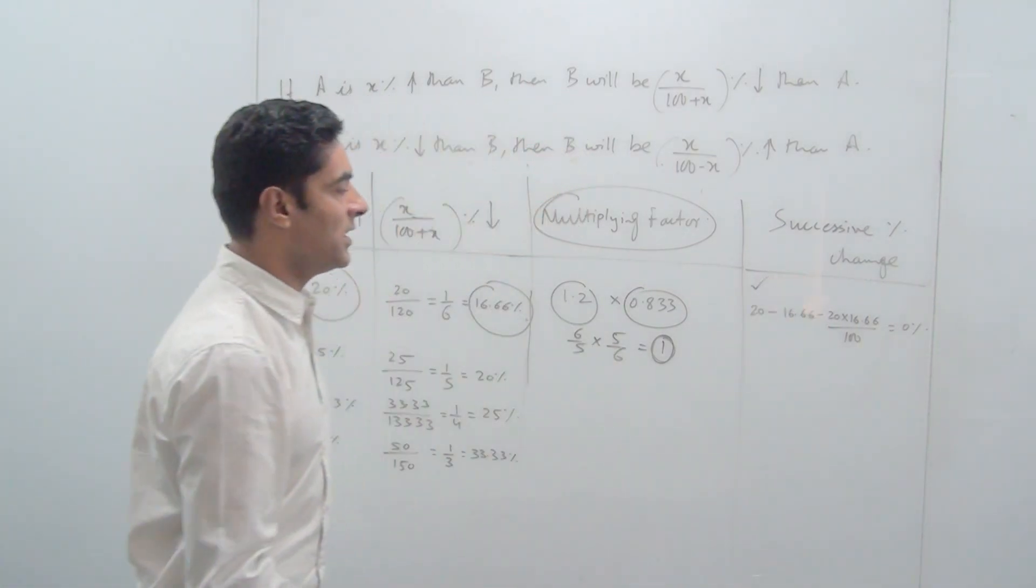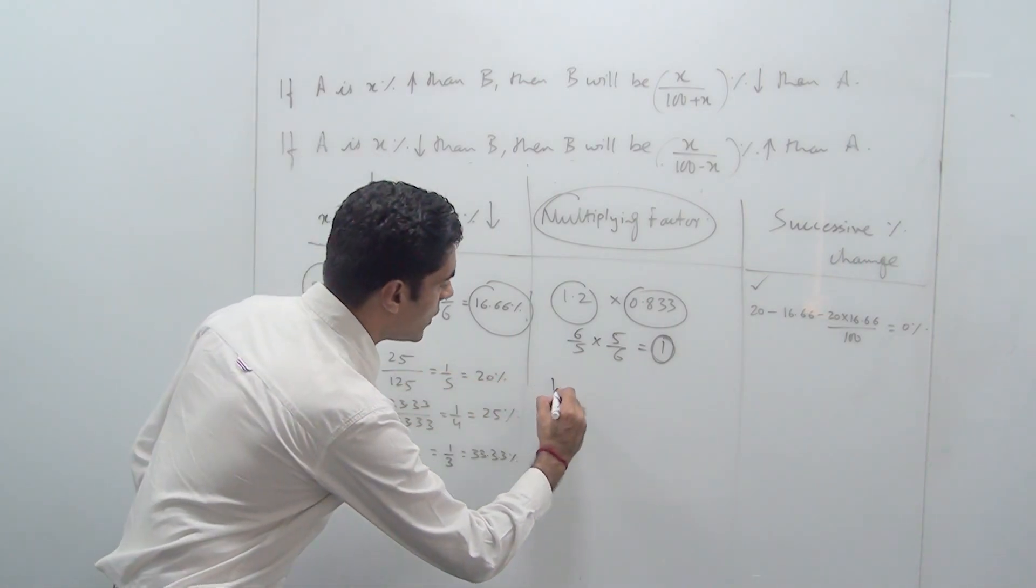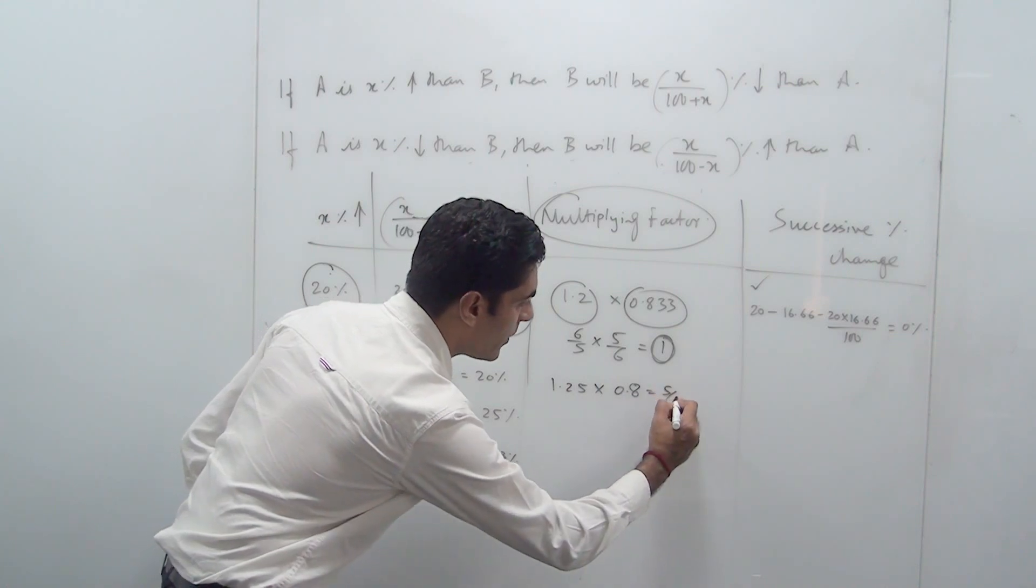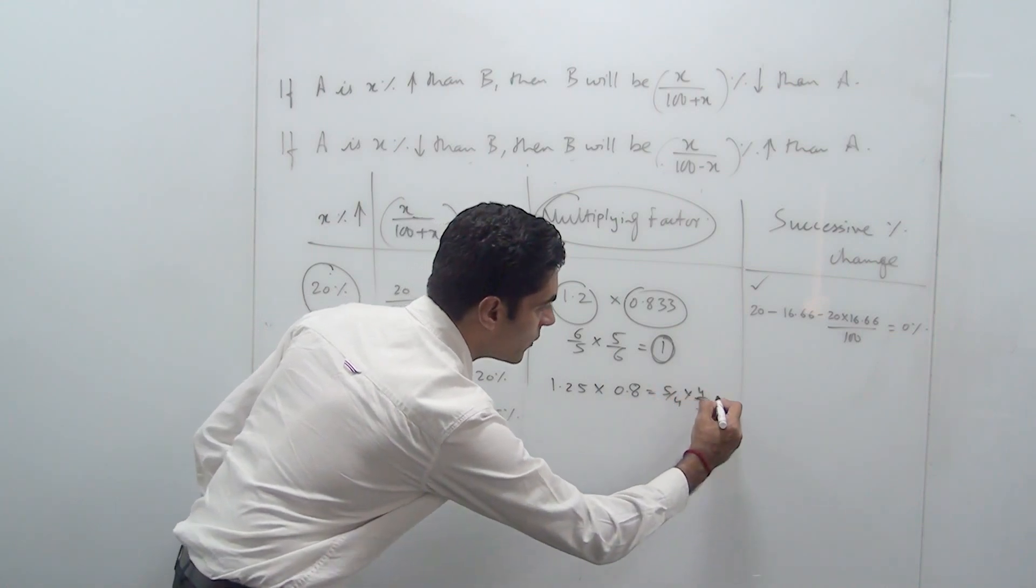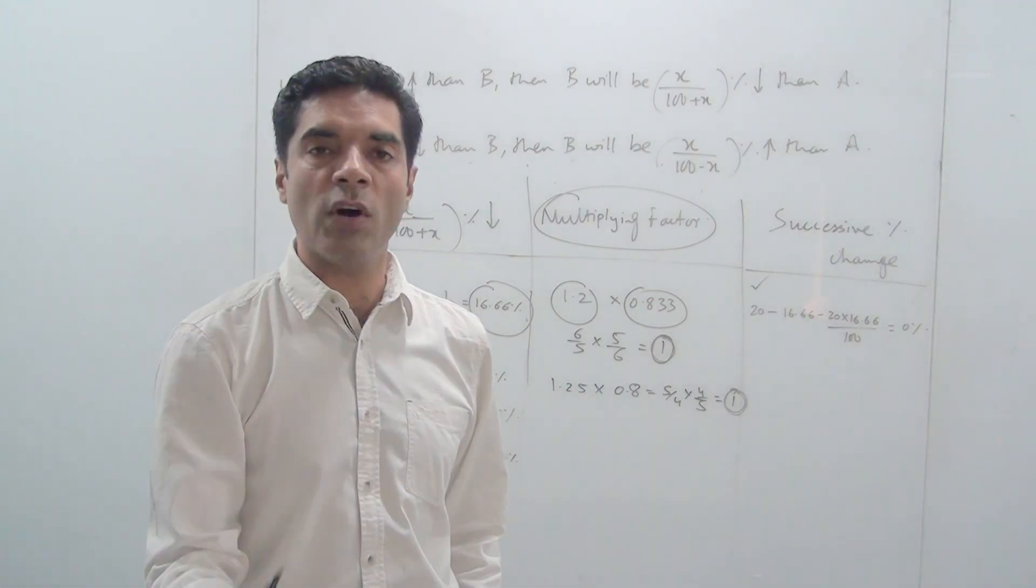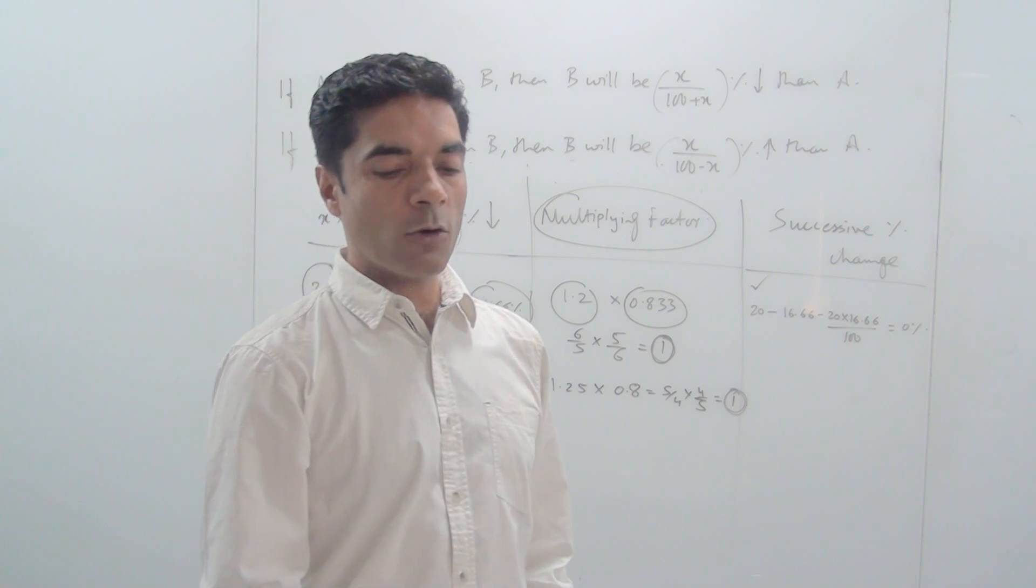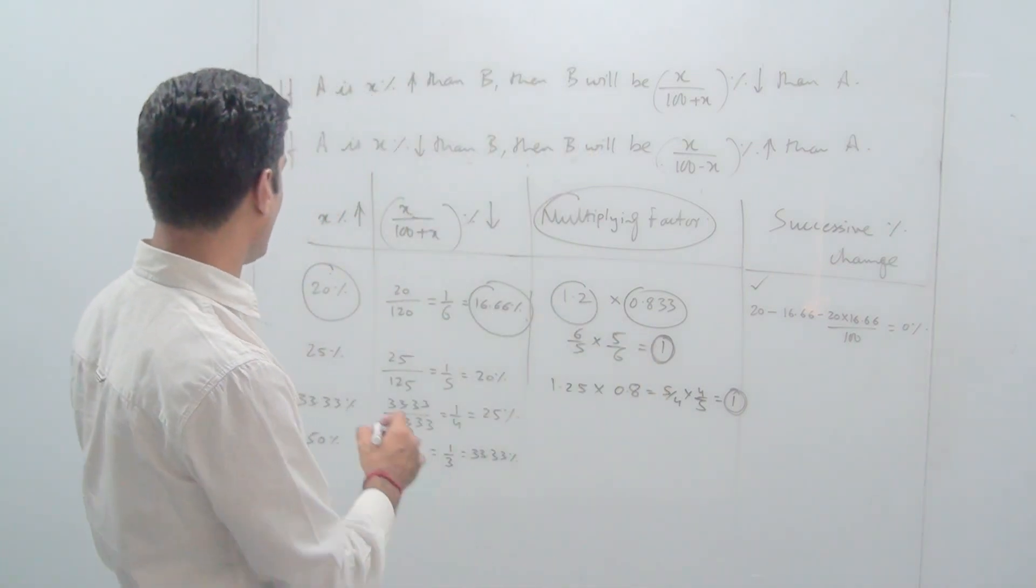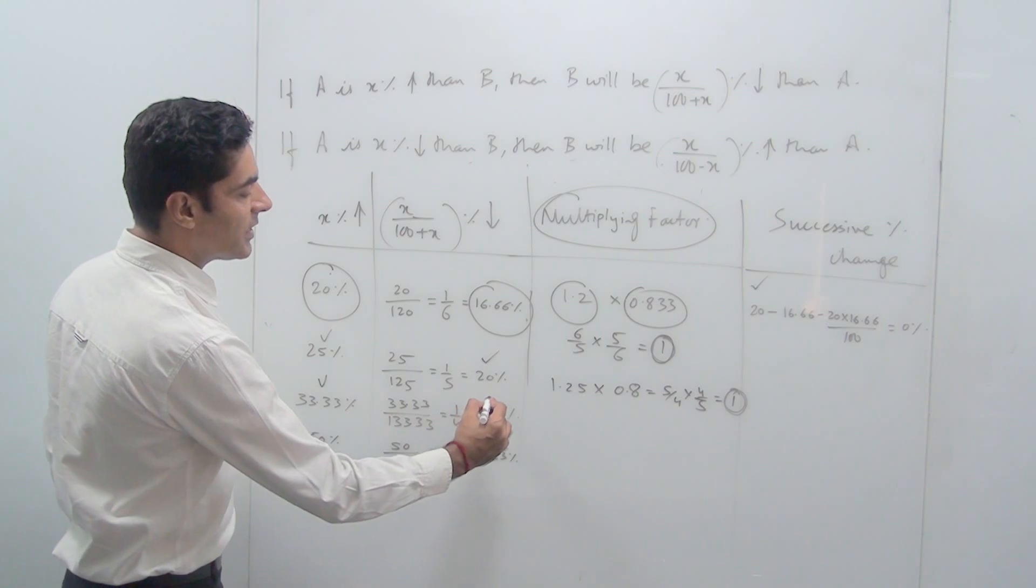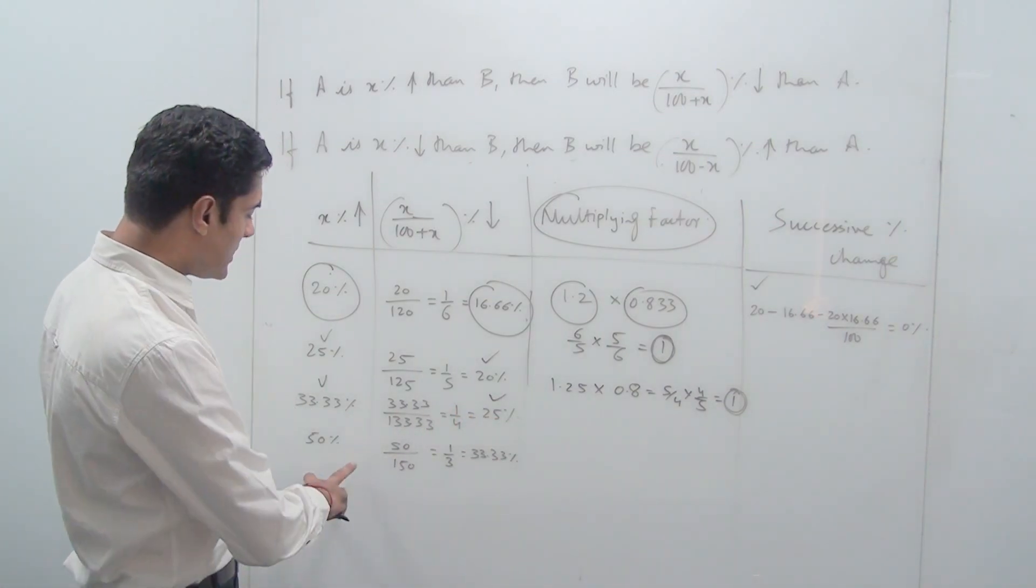Similarly, this is through successive percentage change. If you want to do it for 20 and 25, it is going to be 1.25 and this is going to be 0.8. You convert this into a fraction: this is 5 by 4, this is 4 by 5. If you solve this, you get 1. If the ultimate value remains 1 only, that means there is no change. So these two get compensated. I can also say that the compensating value of 25 percent is nothing but 20 percent, and that of 33.33 is nothing but 25, and that of 50 is nothing but 33.33 percent.